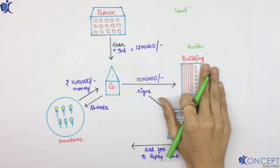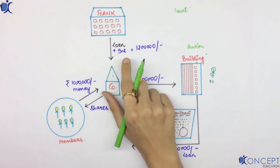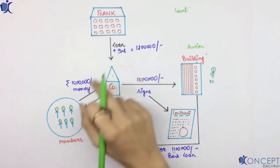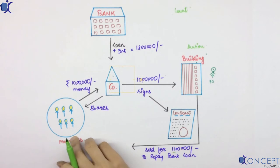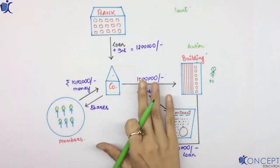Now bank decides that I have to approach these members, because the company is owned by these members. So bank approaches for this 1 lakh rupees to these members. Now members can very politely say, Sir, I am not liable. Why?